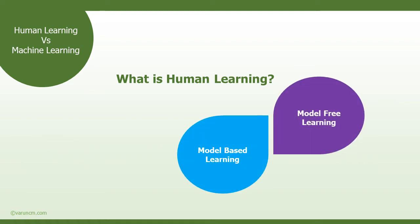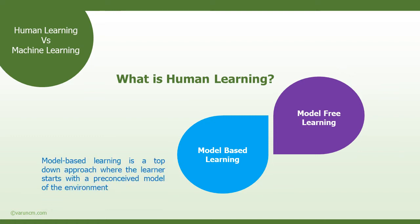We can normally classify human learning into two different ways: model-based learning and model-free learning. Model-based learning is a top-down approach where the learner starts with a preconceived model of the environment. Because of this, the learning is based on planning, predictions, and actions that are made, and it works completely based on probabilities and rewards of this model.